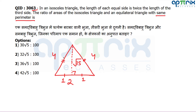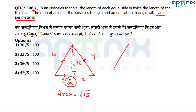The area of the isosceles triangle is (1/2) × base × altitude = (1/2) × 2 × √15 = √15. The perimeter of the isosceles triangle is 4 + 4 + 2 = 10. Now I need an equilateral triangle with the same perimeter of 10.